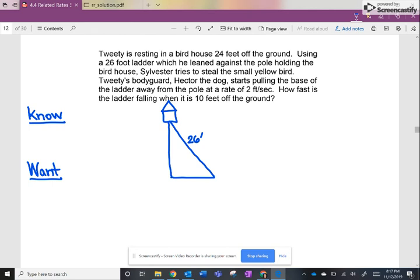Sylvester tries to steal the small yellow bird. Tweety's bodyguard, Hector the dog, starts pulling the base. Well, here's my dog. I'm not very good at drawing. He starts pulling the base of the ladder away from the pole. So he's pulling the ladder away at a rate of 2 feet per second. Okay folks, there's my first given rate.